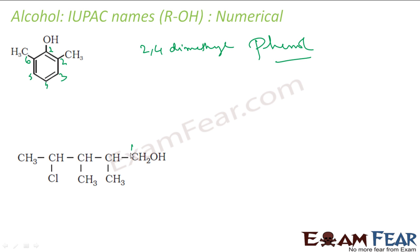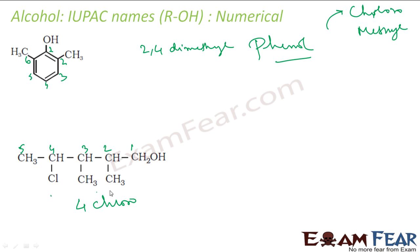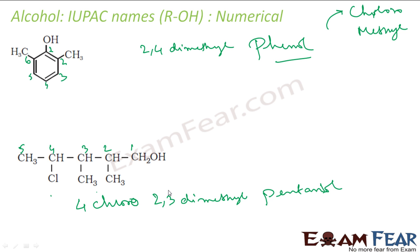Again, OH is my principal group so position one goes there. One, two, three, four, five — this is the longest chain. I have chloro at four, and methyl groups at two and three: meth-eth-pro-but-pent → pentan-1-ol. So the full name is 4-chloro-2,3-dimethylpentan-1-ol.